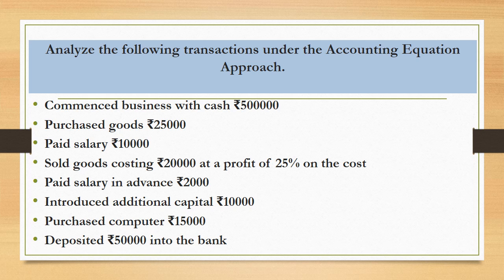The question says they want you to prepare an accounting equation. First transaction: a businessman commences business with cash rupees 50,000. He purchases goods for rupees 25,000. He paid salary for rupees 10,000. He sold goods worth rupees 20,000 at a profit of 25%. He paid salary in advance for rupees 2,000. He deposits 50,000 out of cash in his bank.